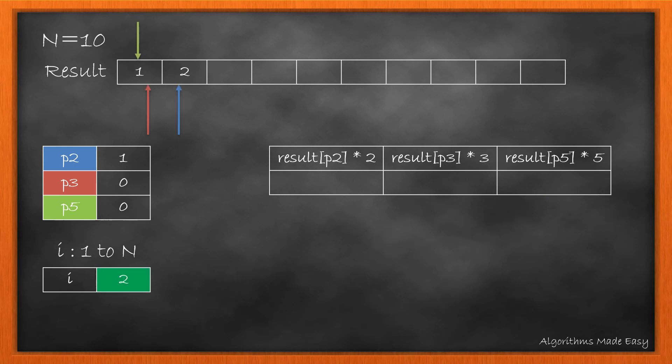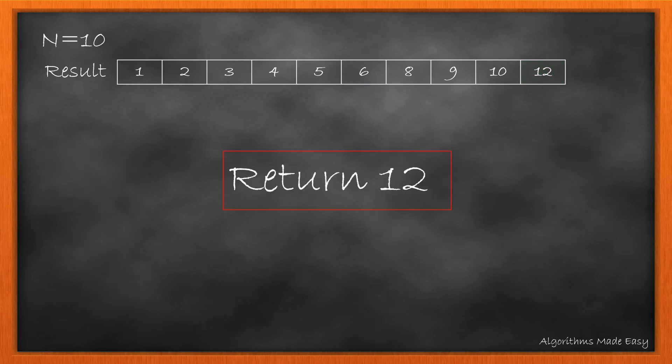This completes our first loop and hence the i gets incremented. We again find the next ugly number and this time the minimum is 3. So we add 3 into result and increment the pointer for 3. Now index is incremented again. The minimum is 4 so we add 4 in the result and increment p2. For index 4 we will do the same. Now we have a case where both result of 2 and 3 are equal to minimum. In this case we increment both pointers. Moving on we continue applying the same logic. We have reached the end of the array and so we return the last value which in this case is 12.